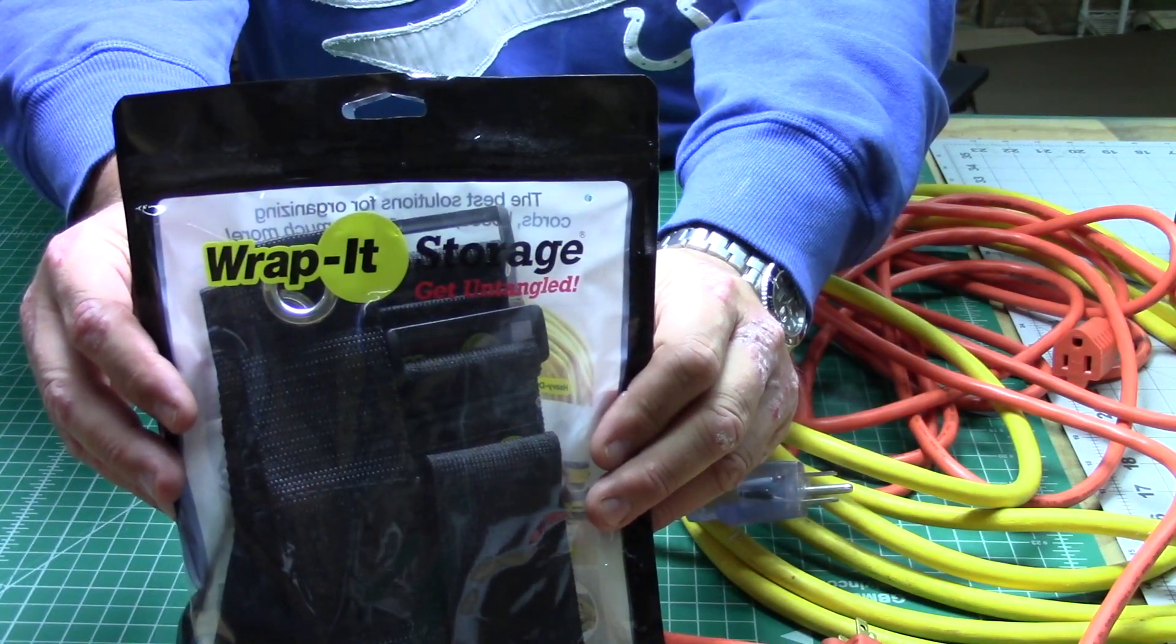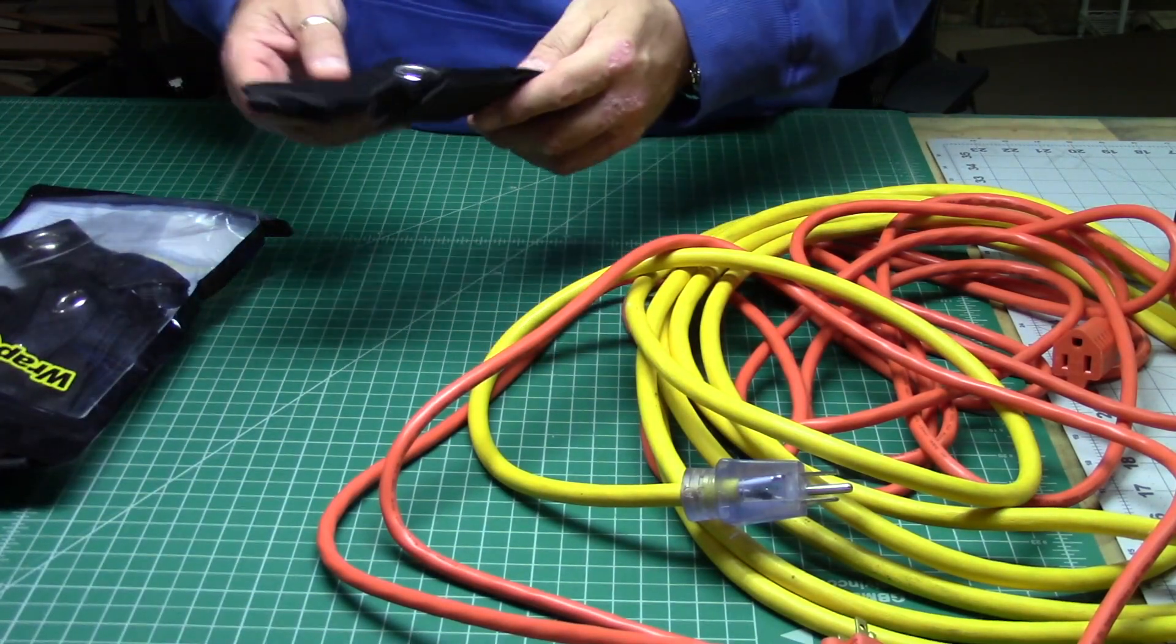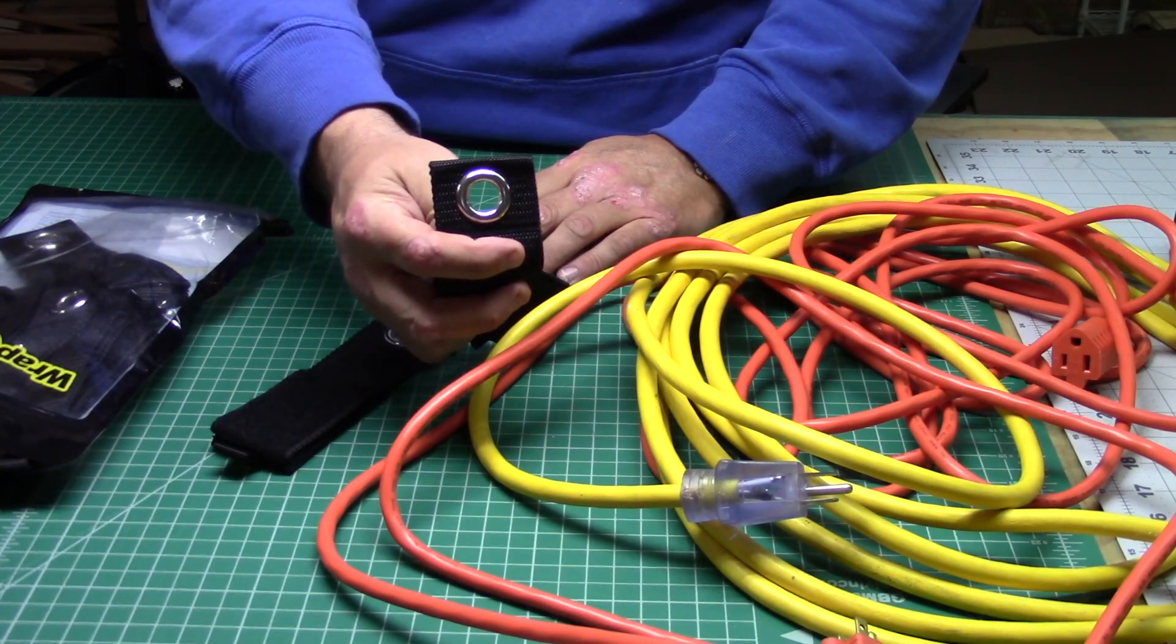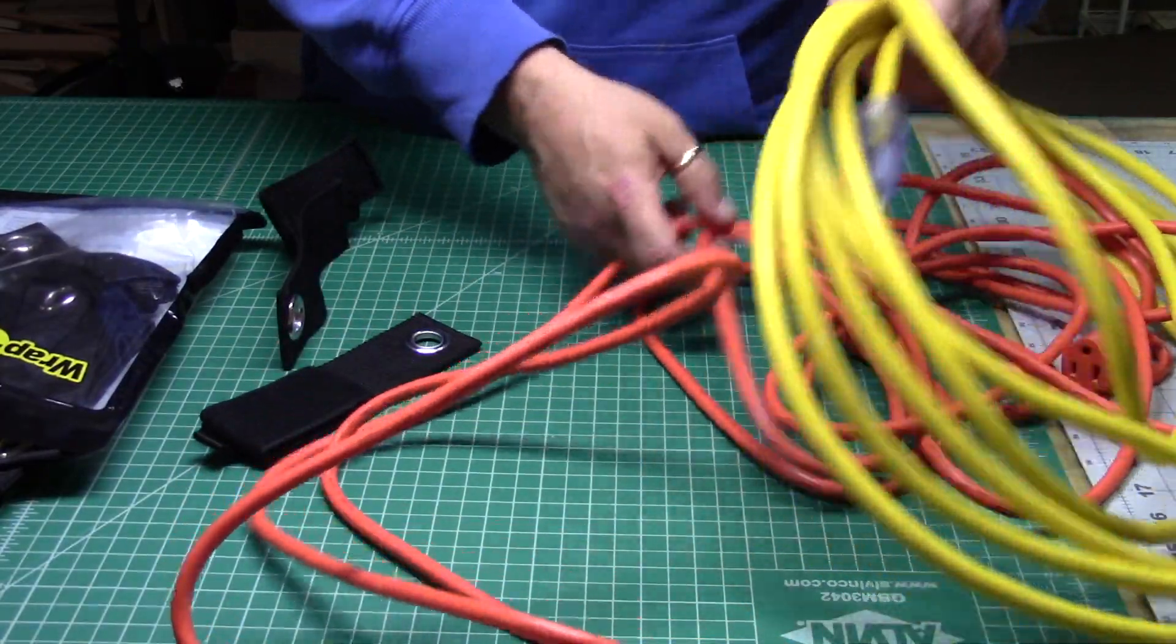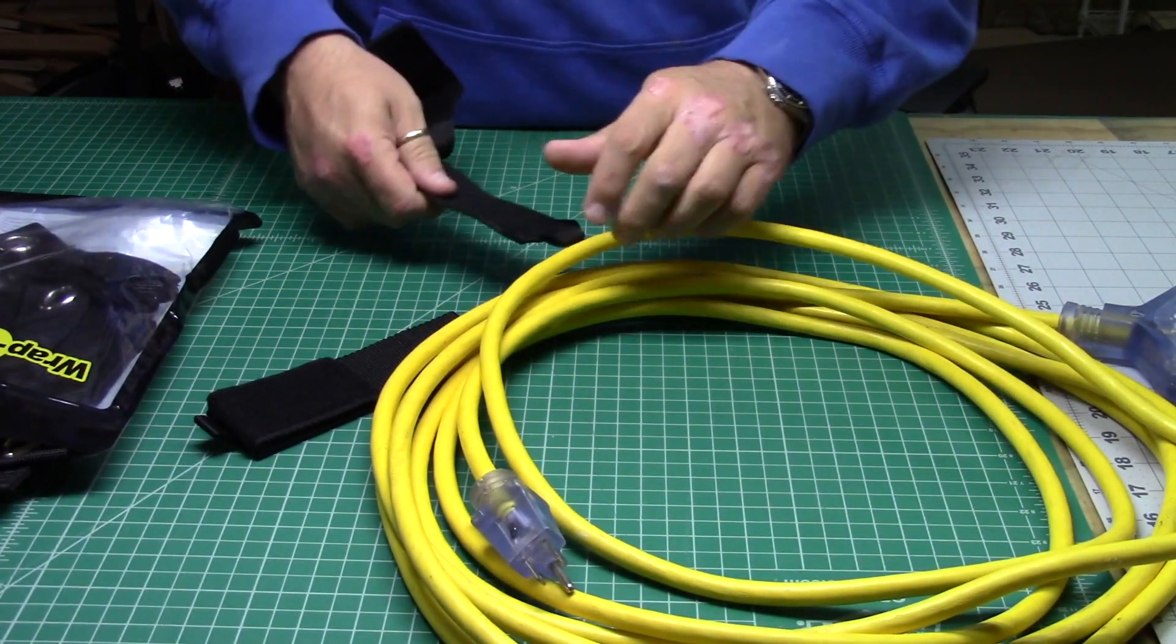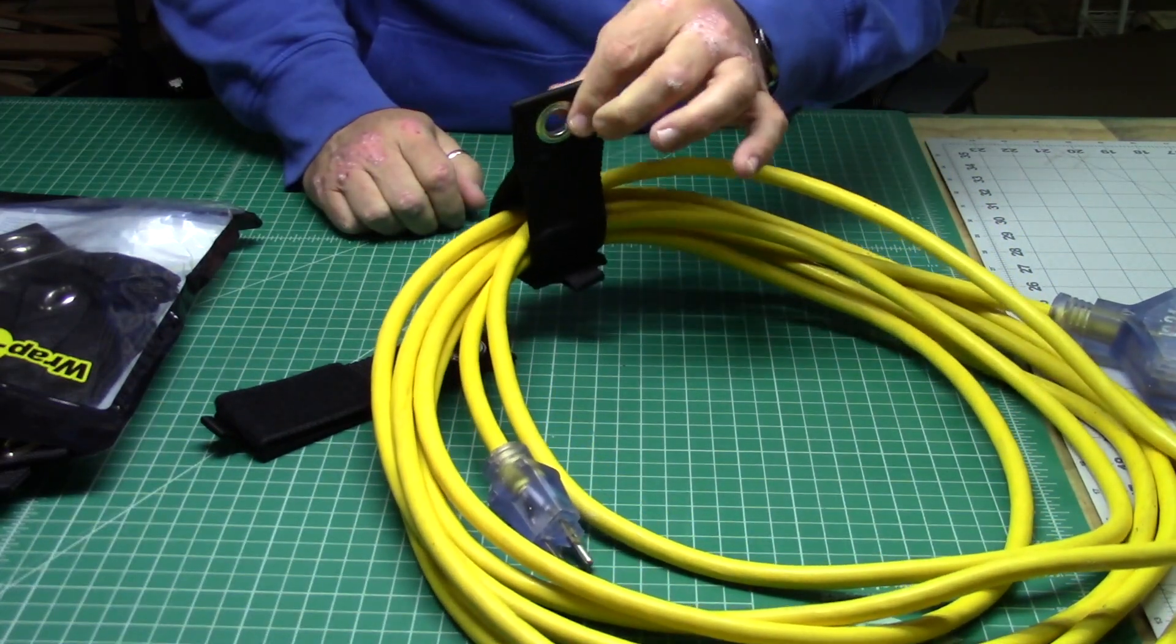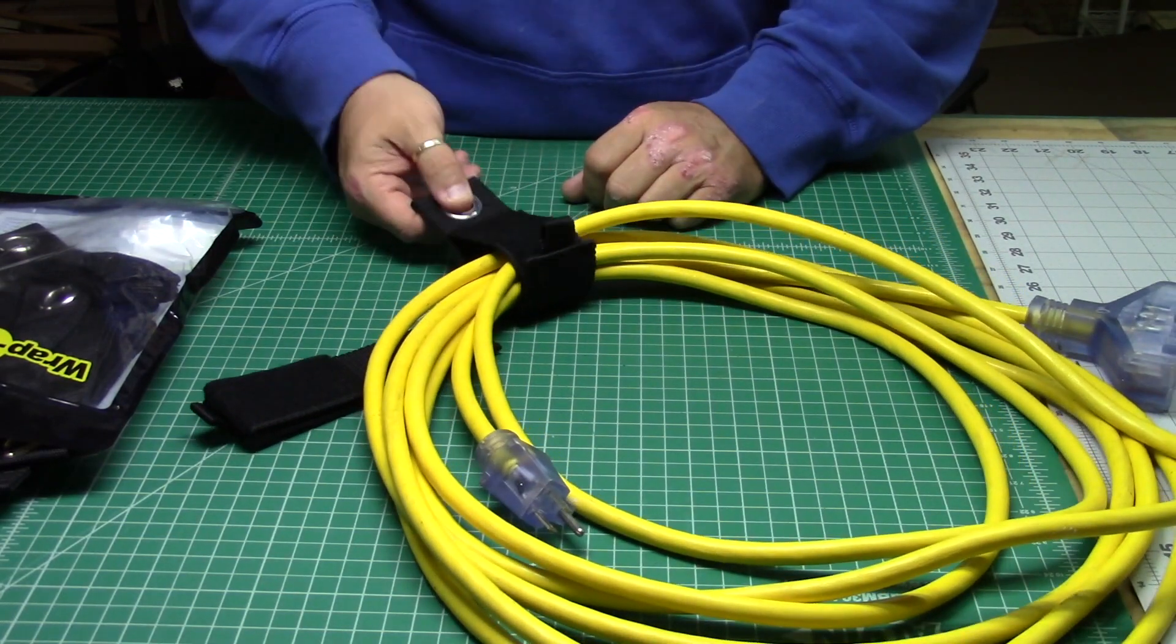Rapid Storage. Once again, not sponsored, but I got to tell you these things are awesome. It's a little velcro and nylon loop with an eyelet in it so that you can hang this stuff nice and neat and pretty. You got your cord all wrapped up, take your nylon thing, you wrap it around here, and there it is. It's ready to hang up on the pegboard.